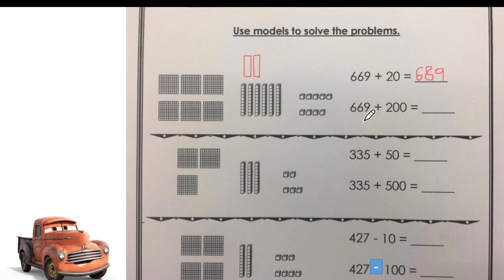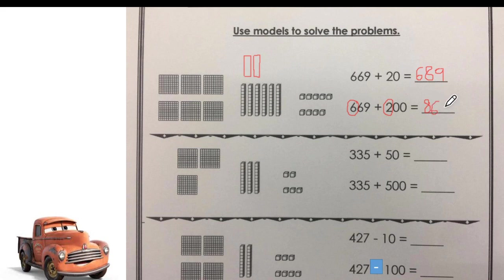For the second one, I'm going to use the mental math. 669 plus 200. I know that the hundreds digit is the first one. So, 6 plus 2 equals 8. And the rest — I will copy — the tens and ones stay the same. Again, if you want to work alone, you can do it alone and check your answers.